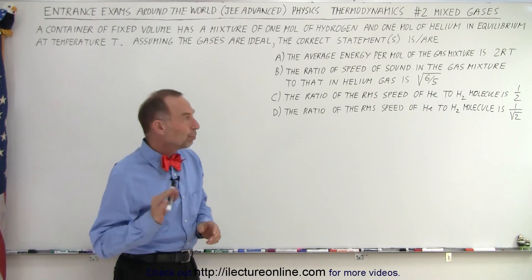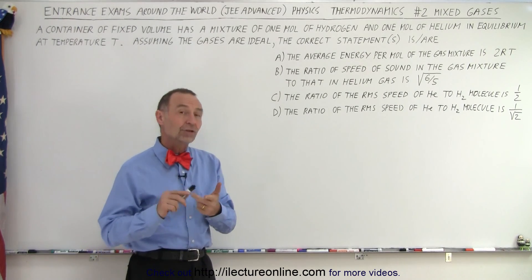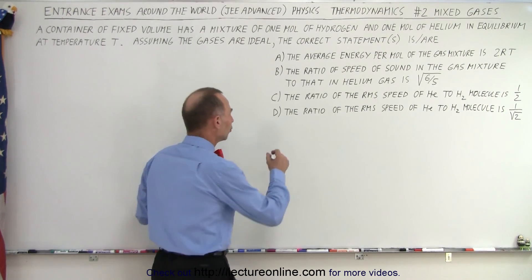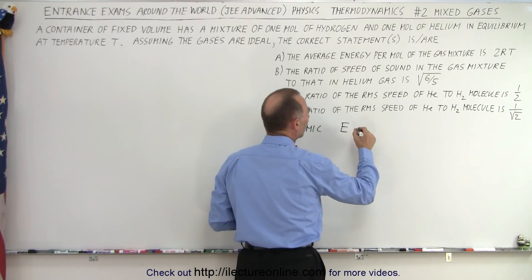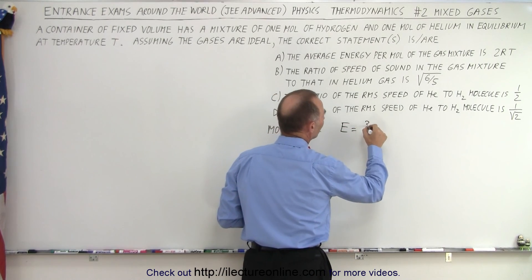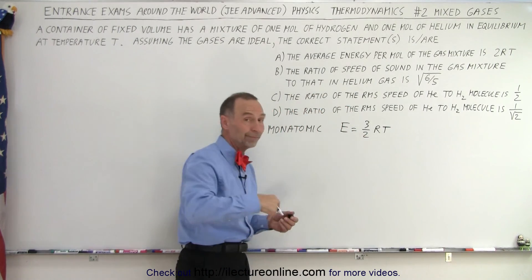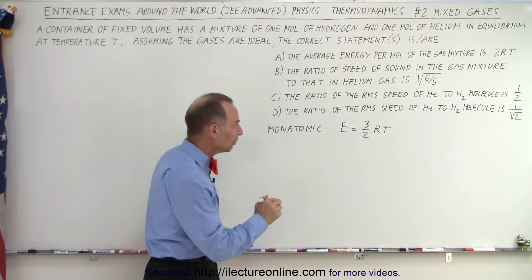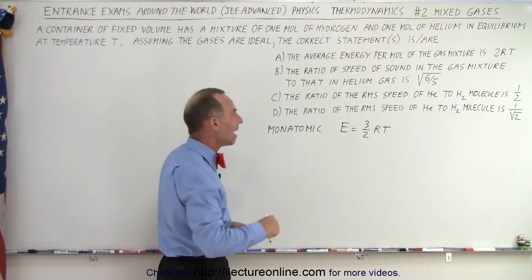Let's see if statement A is correct: the average energy per mole of the gas mixture is 2RT. We have helium and hydrogen. Helium is a monatomic gas, hydrogen is a diatomic gas. For a monatomic gas, the energy for one mole is equal to (3/2)RT — that's because the monatomic gas has 3 degrees of freedom, so it's 3 times (1/2)RT.